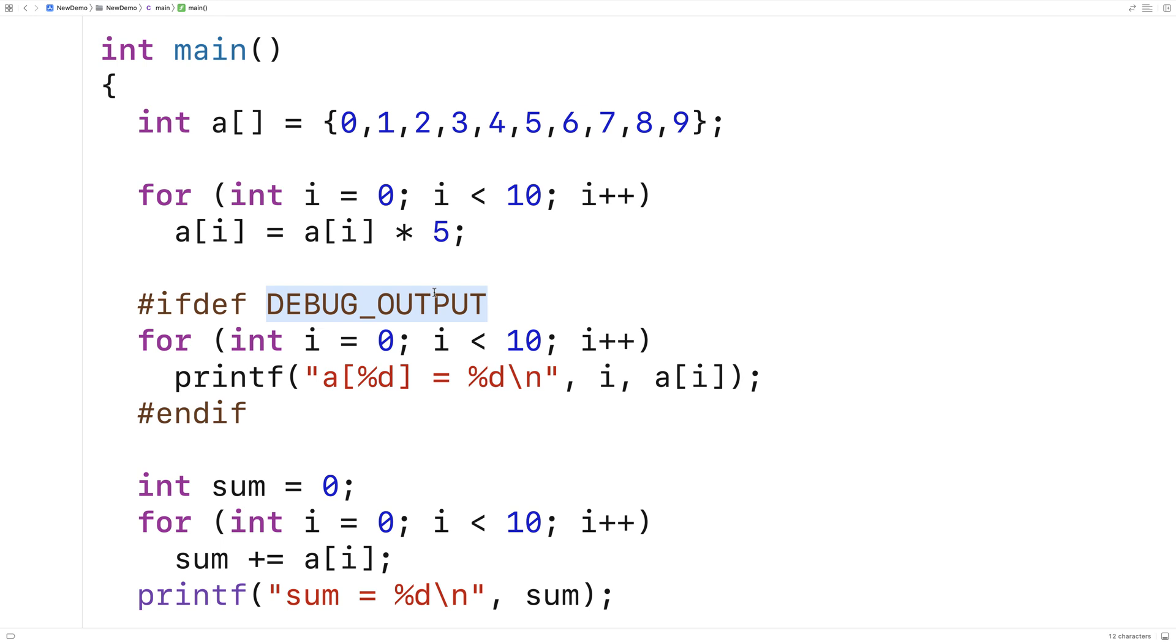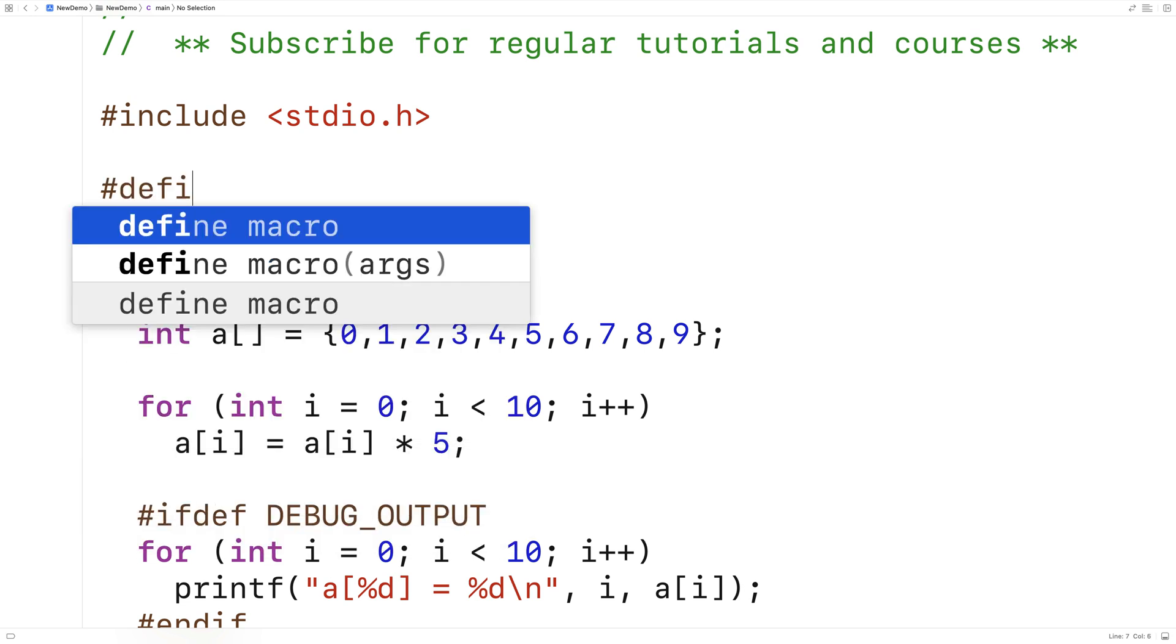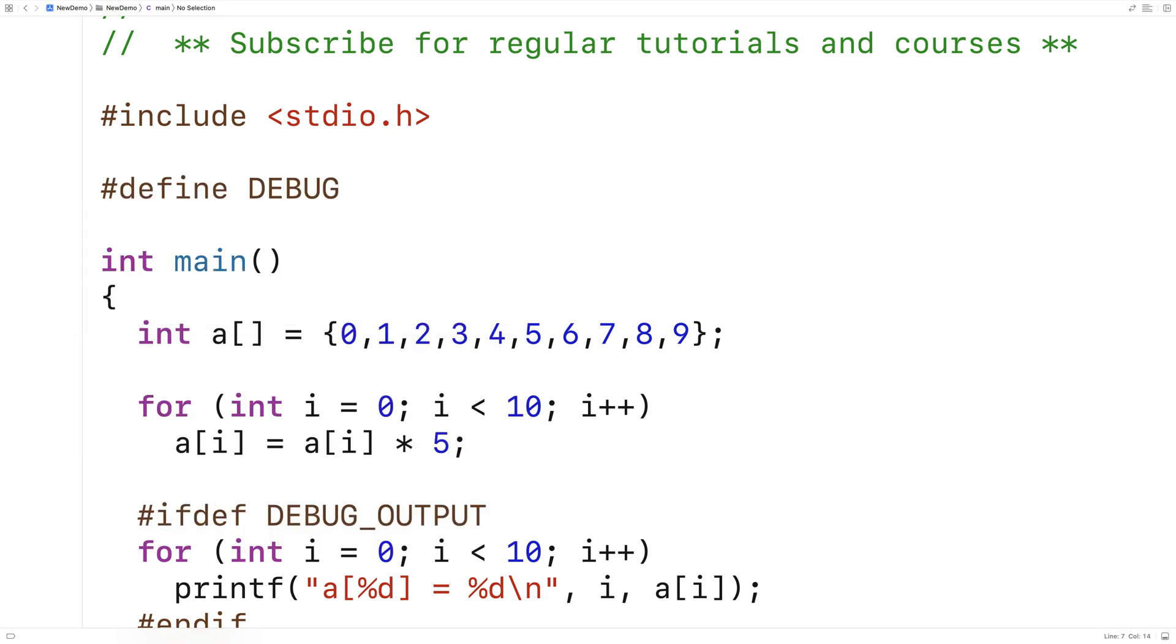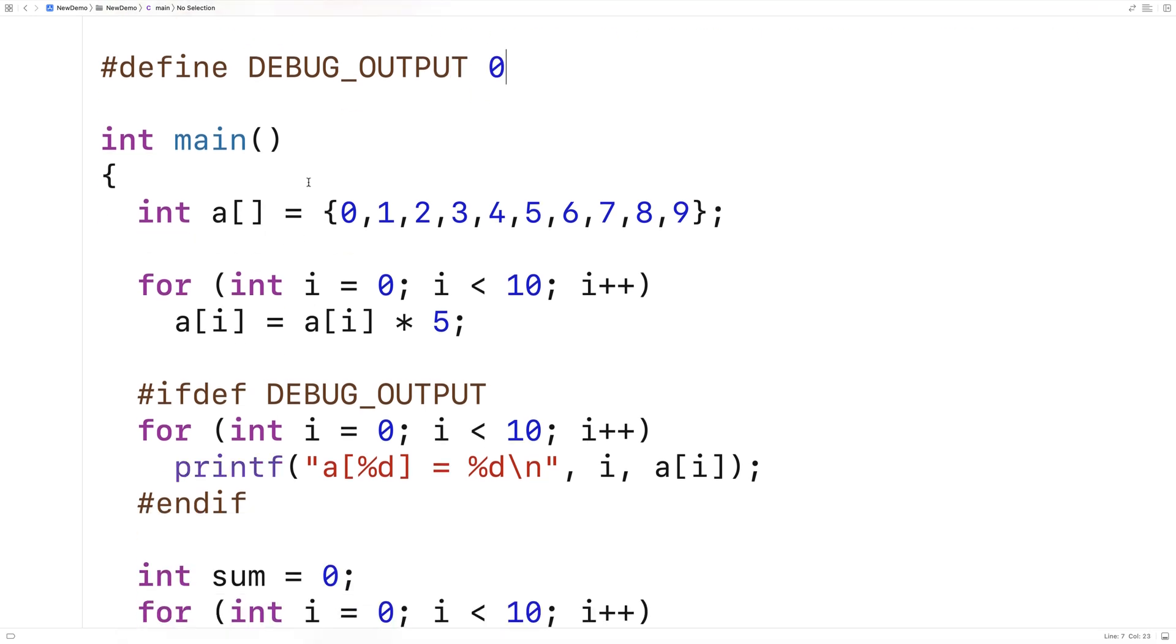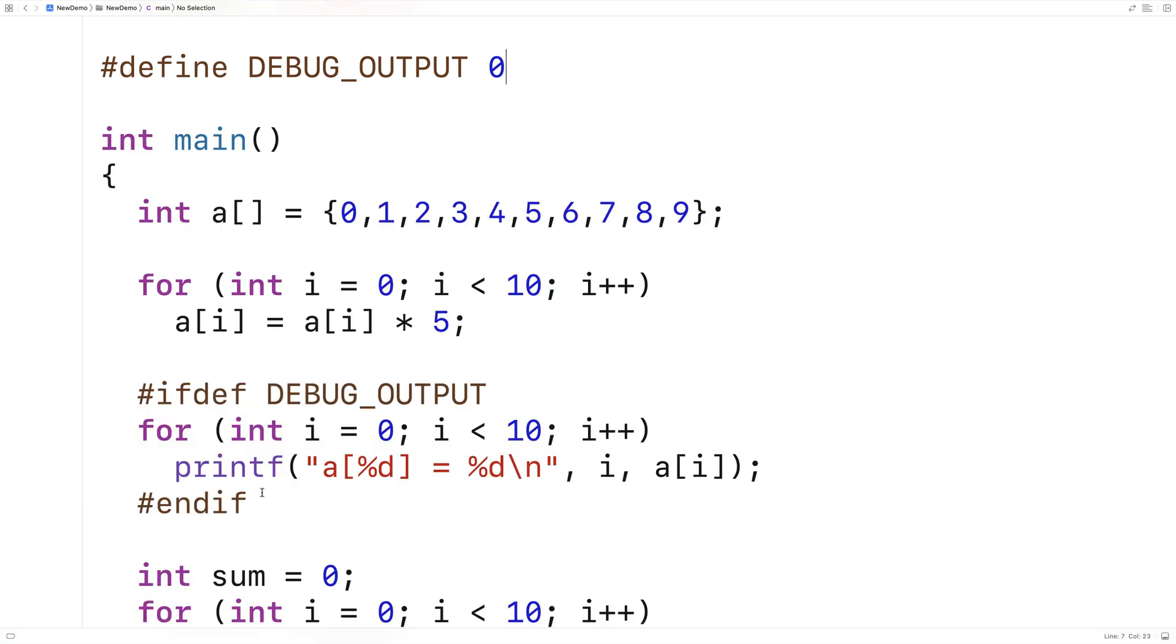If I were to define DEBUG_OUTPUT, then this would be included in the source code that's compiled. Up here, if I say define DEBUG_OUTPUT 0, and save this and run it, we are going to get the output of the array elements.